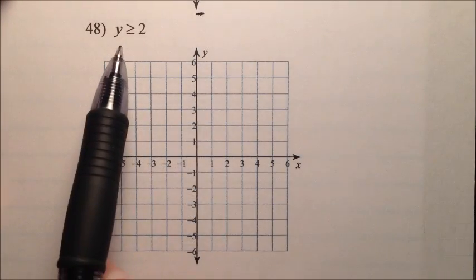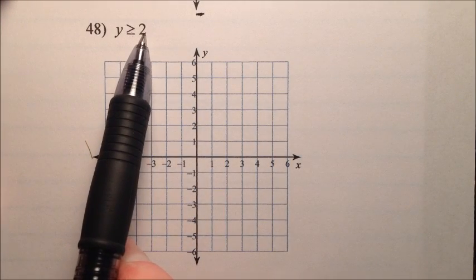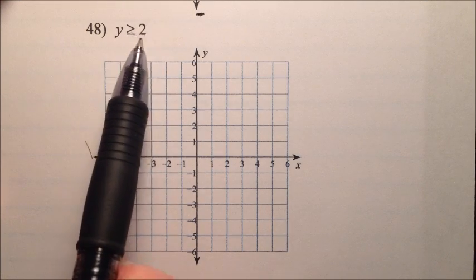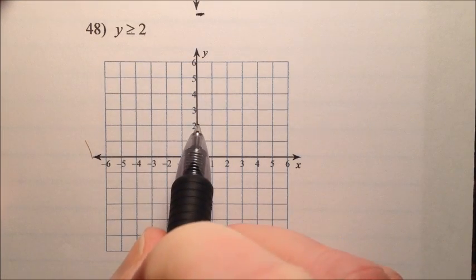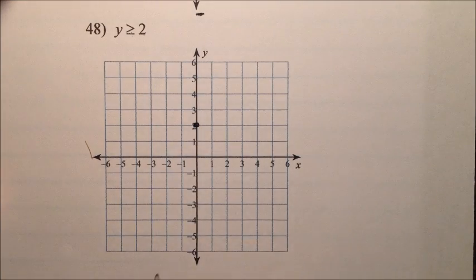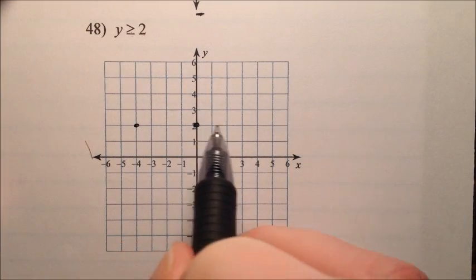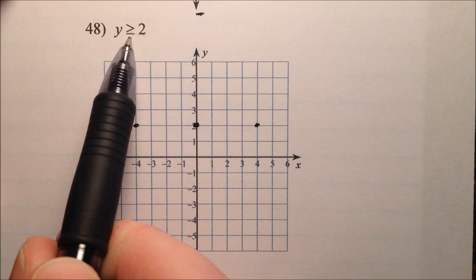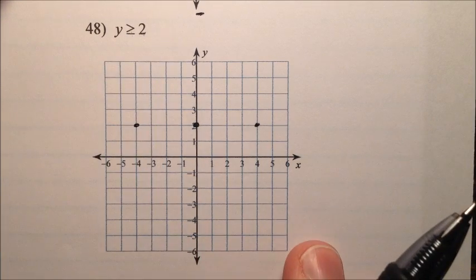In number 48, we have y is greater than or equal to 2. Notice that it's going to be a horizontal line, and its y intercept will be 2. So we'll go ahead and put that point right there. And since it's a horizontal line, I'll go ahead and put some other points there. Notice it will be a solid line because we have that equal sign there.